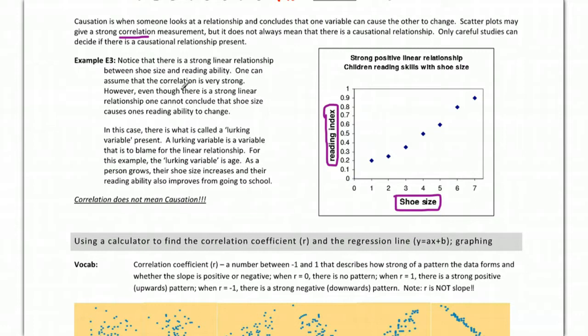So you can assume that the correlation is strong. The correlation, the relationship is very strong. However, it doesn't mean that shoe size causes you to have a high reading ability. Yes, they are linked, but it doesn't mean that shoe size is the reason that people have a high reading score.